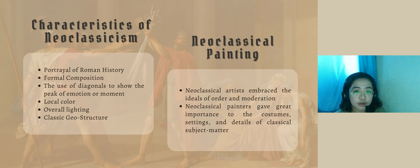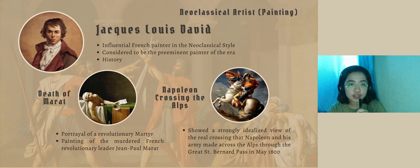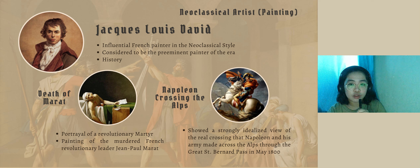Neoclassical artists in the field of painting include Jacques-Louis David. When the French Revolution began in 1789, he served as artistic director and painted its leaders and martyrs. Later he was appointed painter to Napoleon. Some of his works are Death of Marat, depicting the assassination of Jean-Paul Marat, a radical activist of the French Revolution, and Napoleon Crossing the Alps, which showed a strongly idealized view of Napoleon and his army crossing the Alps through the Great St. Bernard Pass in May 1800.